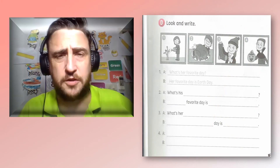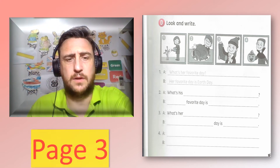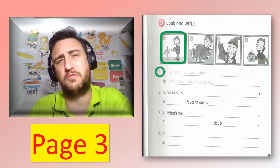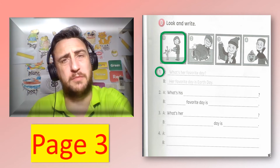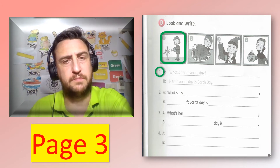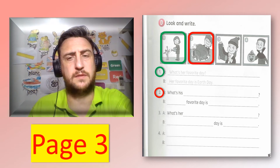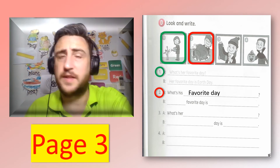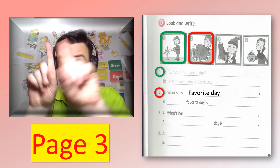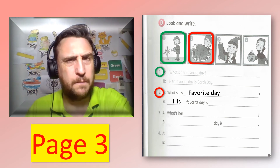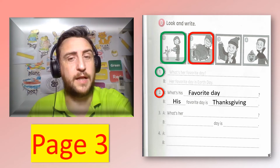Here's part D — let's look at the answers for part D, page number three. Number one you already know because it is written in the book: what's her favourite day? It's a girl, so 'her'. Her favourite day is Earth Day. Number two — look at the picture. The boy is eating turkey. What's his favourite day? The question uses 'his', so the answer will also be 'his'. His favourite day is Thanksgiving — that's when they eat turkey.